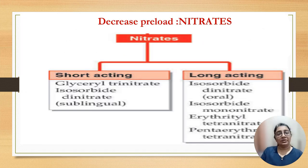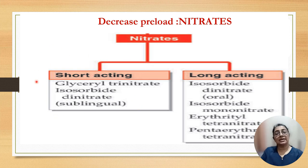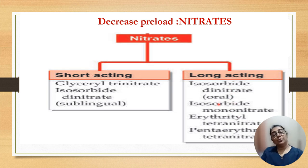Nitrates are drugs that reduce preload. There are two types: shorter-acting nitrates — glyceryl trinitrate and isosorbide dinitrate — given by the sublingual route in acute attacks of angina, and longer-acting drugs — isosorbide dinitrate and isosorbide mononitrate — useful for prophylactic purposes and given by oral route.